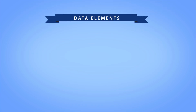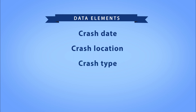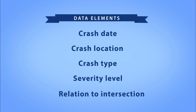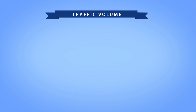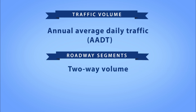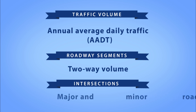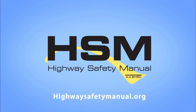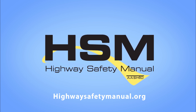Regarding crash data, you will need to identify several data elements for each crash during the study period, including the crash date (at least the year), crash location, crash type, severity level, and relation to the intersection — such as at intersection, intersection related, or not intersection related. For traffic volume, you need the annual average daily traffic or AADT. For roadway segments, this is the two-way volume. For intersections, this includes the volume on the major and minor roads. The roadway characteristics data requirements depend on the facility type of interest, and can be found in the first edition of the HSM.